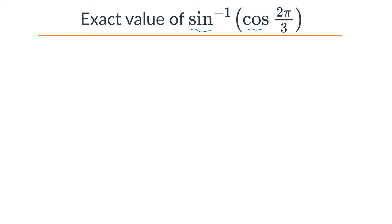What we're going to do is first find the exact value of cosine(2π/3), and then take the inverse sine of that result. To do that, we'll use the reference angle method.